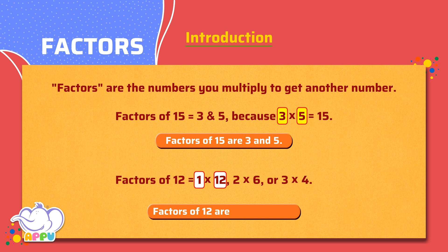The factors of 12 are 2, 6, 3, and 4. We arrange it as 2, 3, 4, and 6. Let's look at a method on how to find factors.